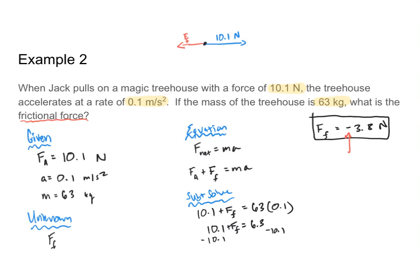For known forces — forces you have a number for — you need to determine if they're positive or negative. So if I knew friction and didn't know my applied force, I would need to give my frictional force a negative sign because it's pointing to the left. But for unknown forces — forces I'm trying to solve for — just add them. Whether the answer is positive or negative will come out when you finish the problem. That's going to be our rule for whether we have to worry about direction or not.